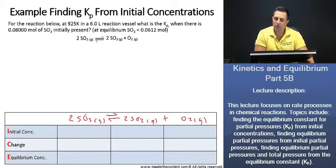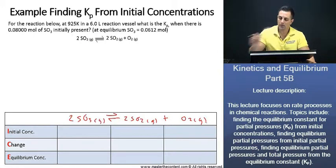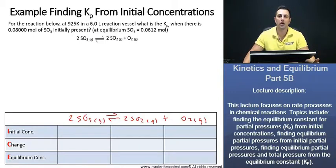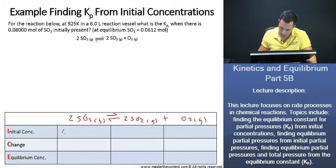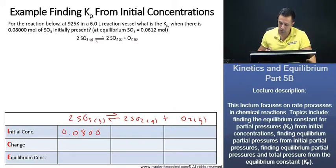Additionally, because our equilibrium data is given to us in moles, we can work the ICE table with moles. Typically, if you're given equilibrium data in moles or partial pressures, you'll work through your ICE table in however the data is given to you. Our initial concentration of sulfur trioxide is 0.0800 moles. We also know the amount of sulfur trioxide present at equilibrium, which is 0.0612 moles.